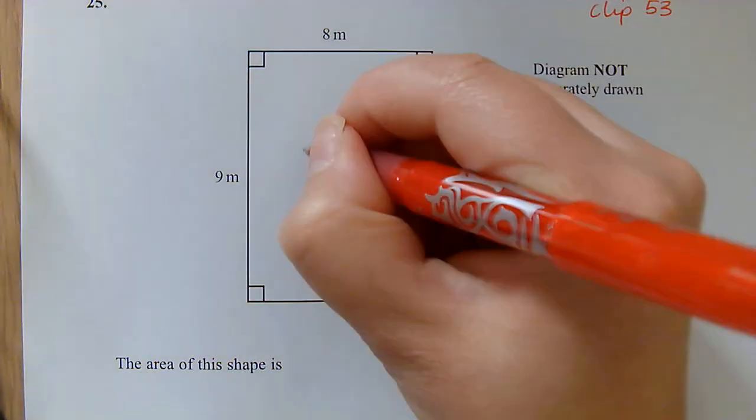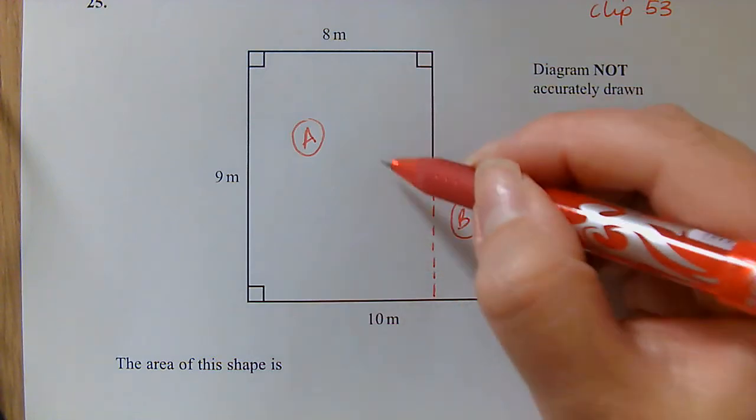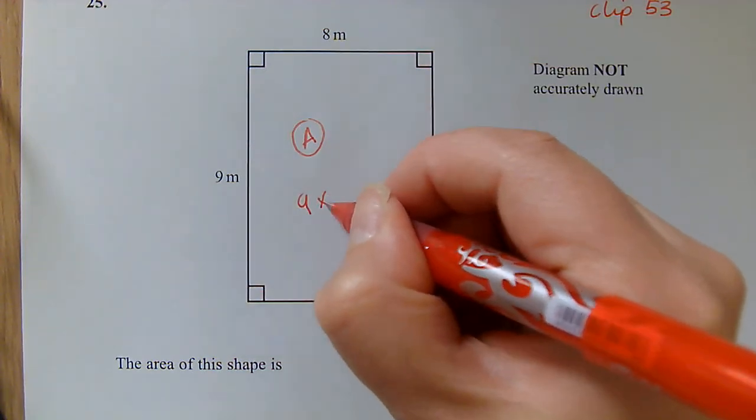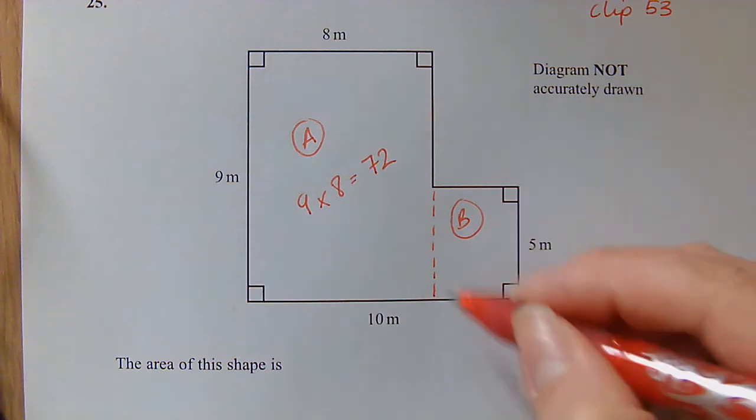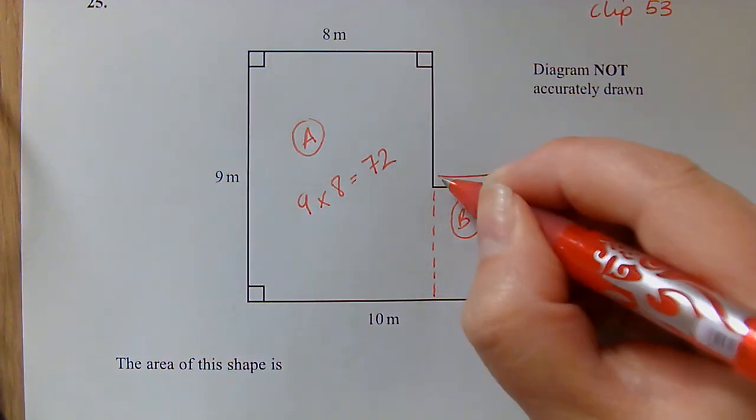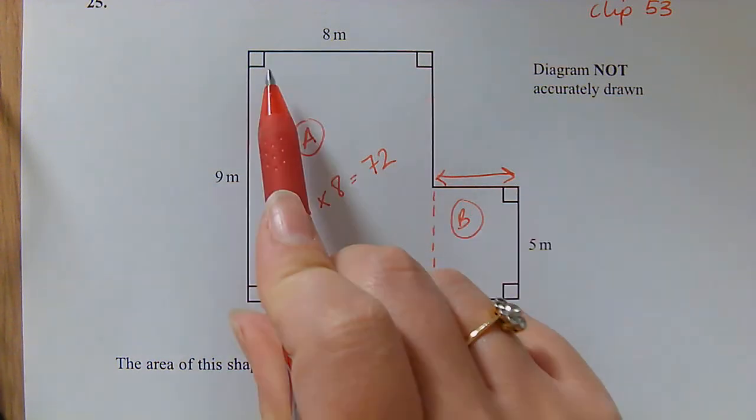So to find the area of A, I need to do our 9 multiplied by 8, which is 72. For this one here, first of all I need to work out what this length is. So if all that is 10 and this one is 8, this distance is 2 meters. So here I've got 5 multiplied by 2 to give me 10.